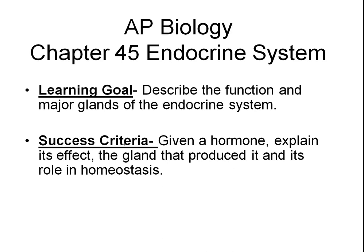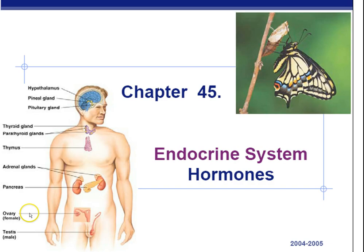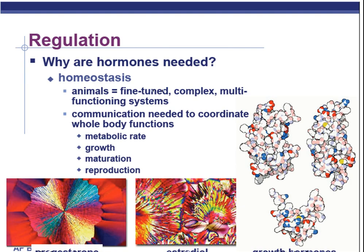AP Biology, Chapter 45, The Endocrine System. Endocrine glands are glands that produce hormones that are released directly into the bloodstream via ducts. And these hormones, even in small quantities, have a fairly large effect on the body.